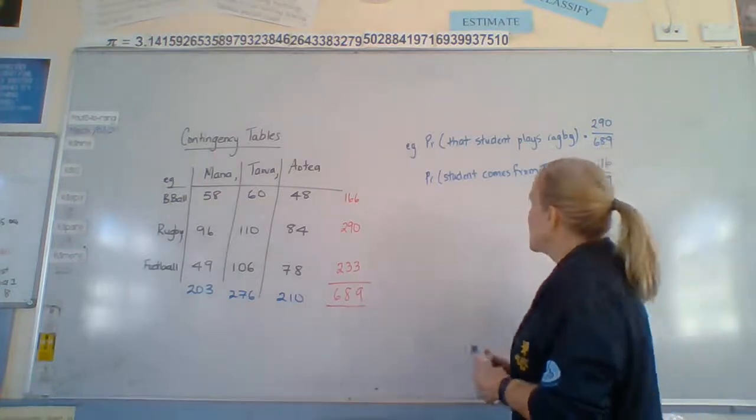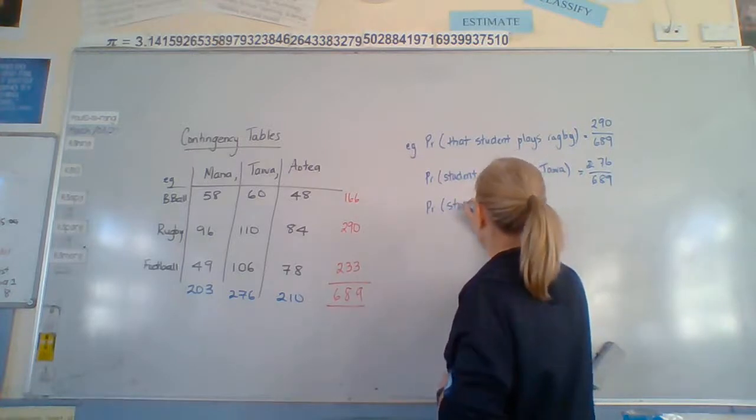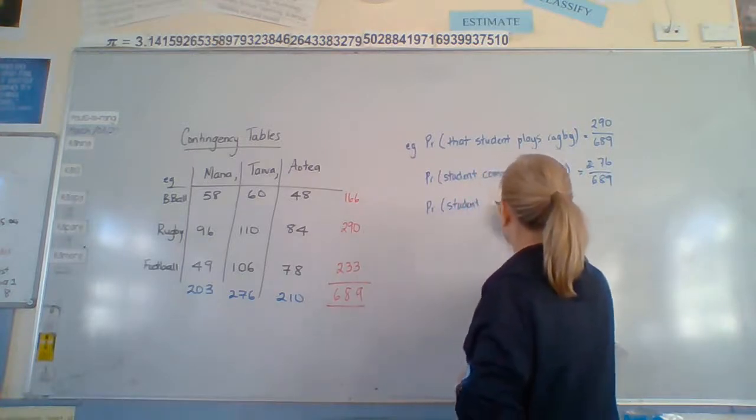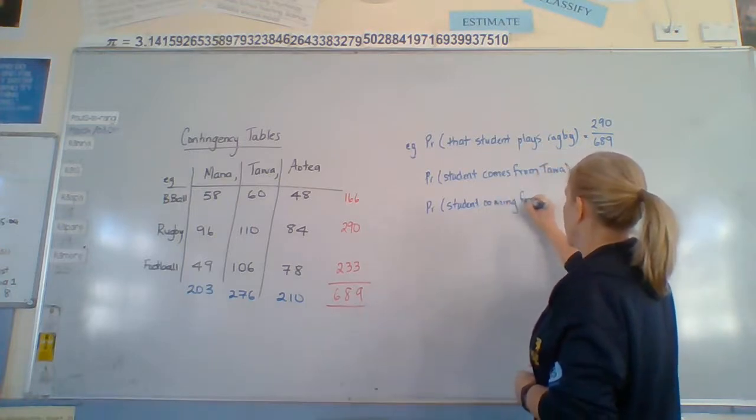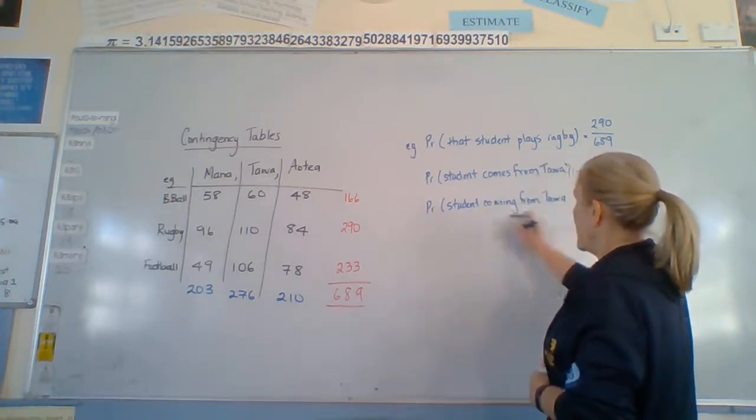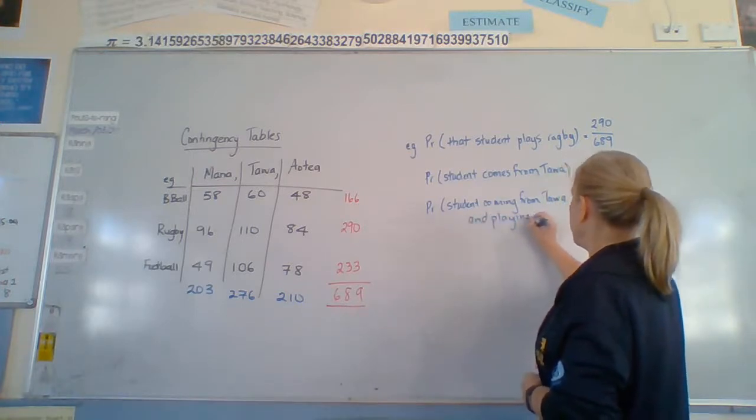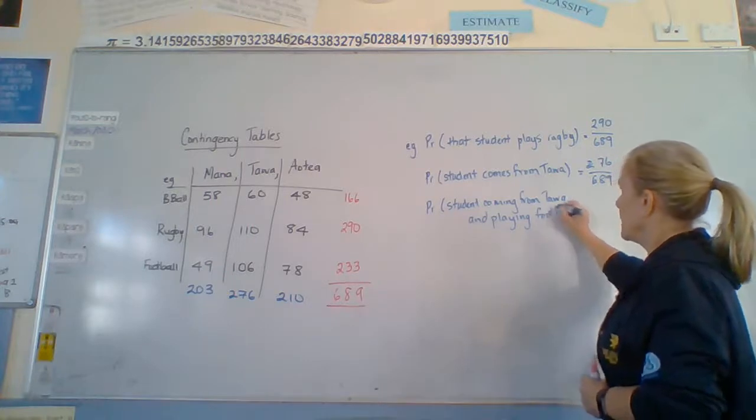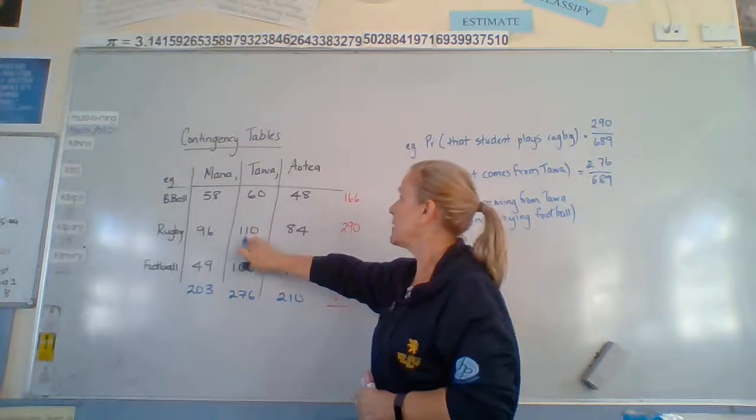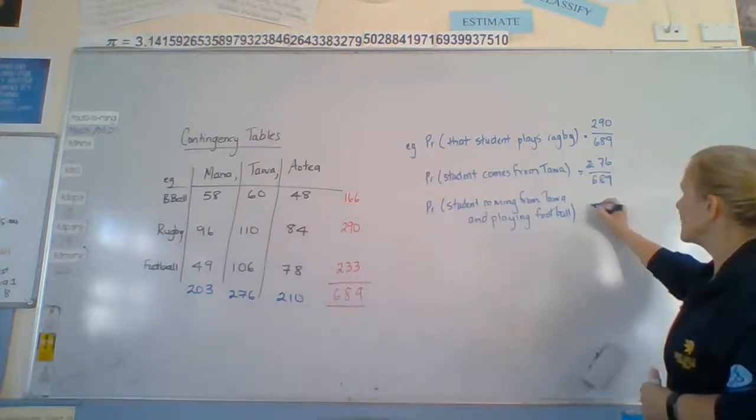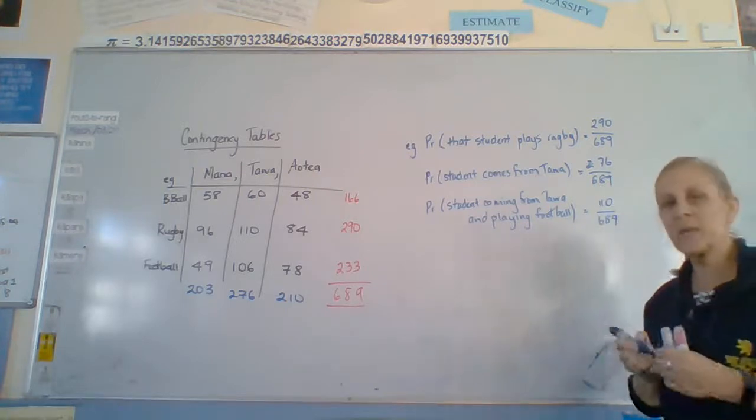Or perhaps we've got the probability of a student coming from Tawa and playing football. Alright, so we're looking at Tawa, football, 110 out of 689. Okay, so that's pretty easy.